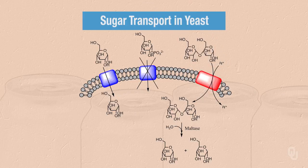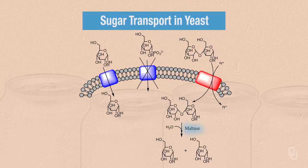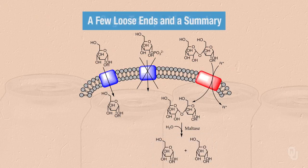Free glucose can diffuse into yeast, and importantly, maltose can also diffuse into yeast via a different transporter. The maltose transporter is a symporter — along with maltose entering the cell, a hydrogen ion also enters. Once maltose is inside the yeast, an enzyme called maltase catalyzes its hydrolysis into two glucose molecules. The glucose, whether entering as free glucose or as maltose hydrolyzed by maltase, can then enter glycolysis and ultimately produce the ethanol found in beer.